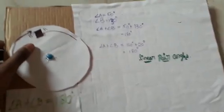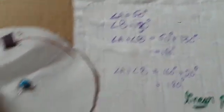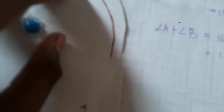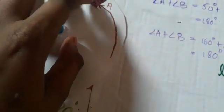And this is a working model of linear pair of angles. As you can see, angle A is equal to 50 degrees and here you can see angle A is equal to 50 degrees. The down one is A and the up one is 130 degrees. Thank you.